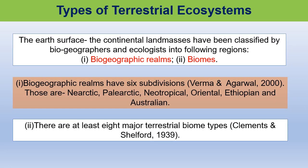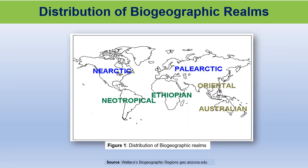Types of terrestrial ecosystems. The terrestrial eco-regions of the world system recognizes six biogeographic realms and eight major terrestrial biome types. The biogeographic realms are large areas within which organisms have been evolving in relative isolation over long periods. Please see the figure in the slide showing distribution of biogeographic realms.